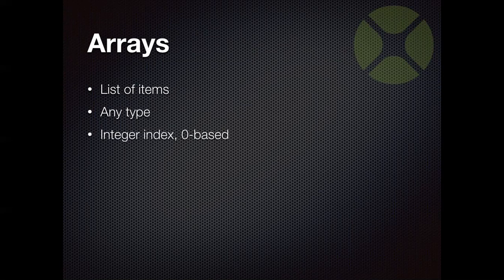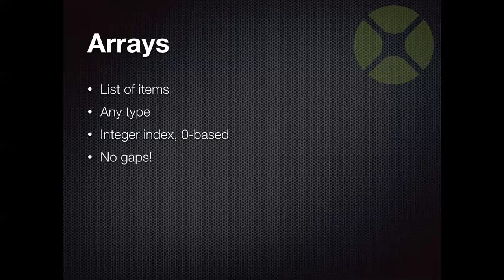Arrays always have an integer index and it is always zero-based, so arrays always start at position zero — you can't change that. There can be no gaps in an array; if you remove an element, the array shrinks and now has one fewer element. If you create an array 'names size 10 as text', there are 11 elements because it starts at zero and goes up to 10.